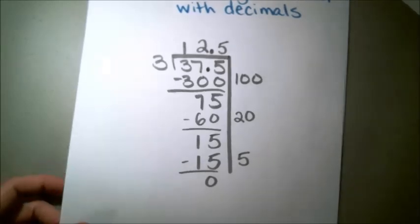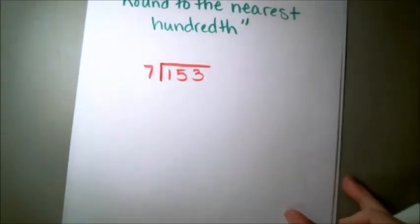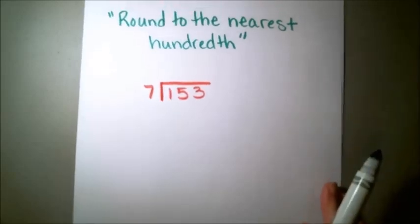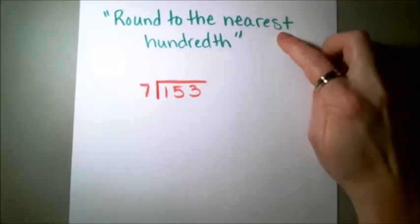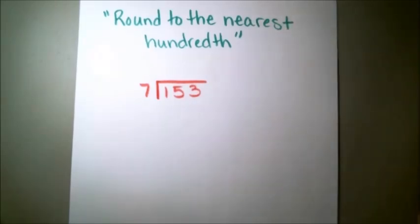This one actually has a decimal that goes on for several place values. So what I always tell my students is look at your directions. Your directions are going to help you immensely in solving these kinds of problems using this method. For this particular one, I'm just going to round to the nearest hundredth.